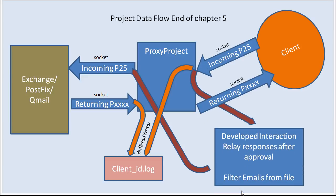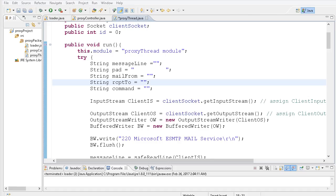Now we're going to change and improve our filtering process. We're going to develop interaction relay spaces, develop interaction relay responses after we approve them, and filter emails from file. I'm going to go very fast — this is not intermediate or beginner Java at this point. We are now moving to a very advanced Java stage, working with multiple data streams and multiple sockets at a time. Get your helmets on — we're back in Eclipse.